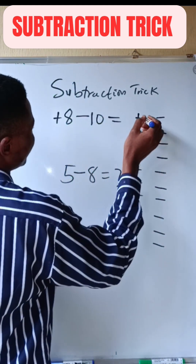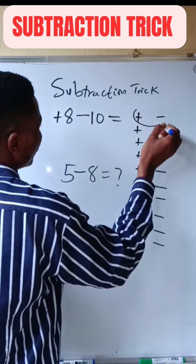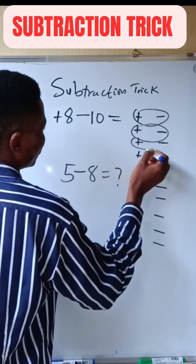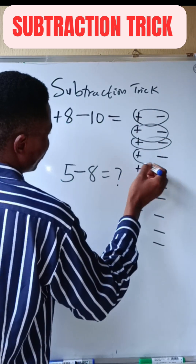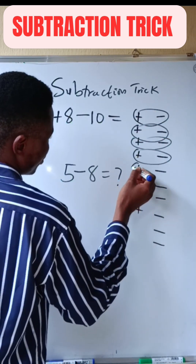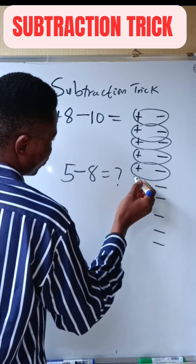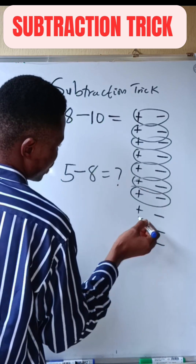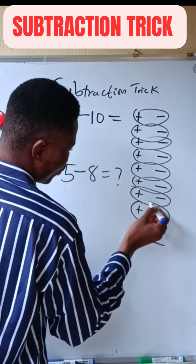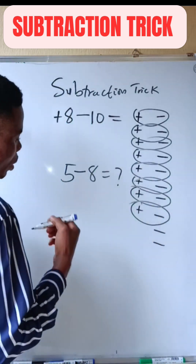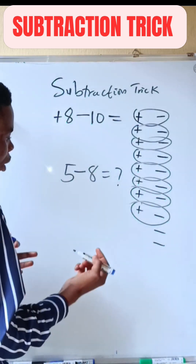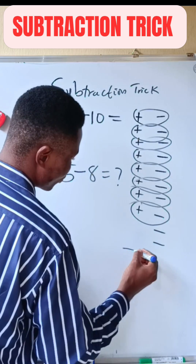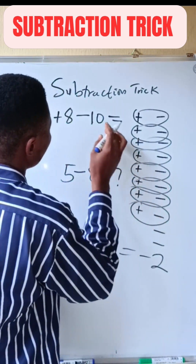So this one will go with this one, this one will go with this one, this one will go with this one, this one will go with this one, this one will go with this one, this one will go with this one. You're left with only 2 minuses. So the answer is minus 2.